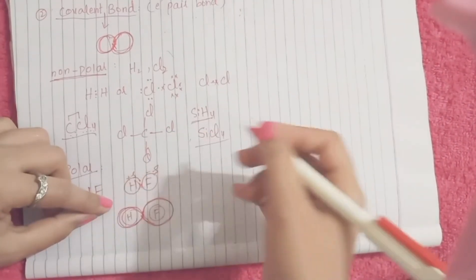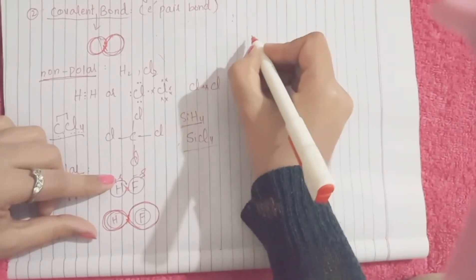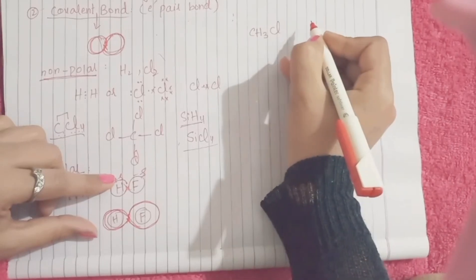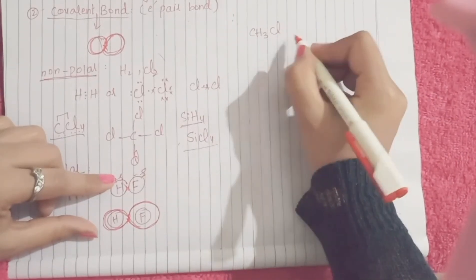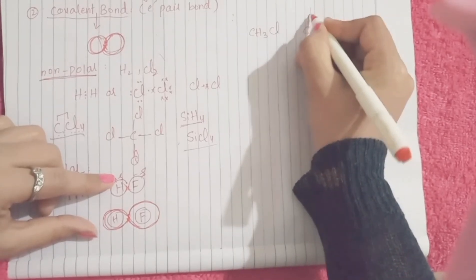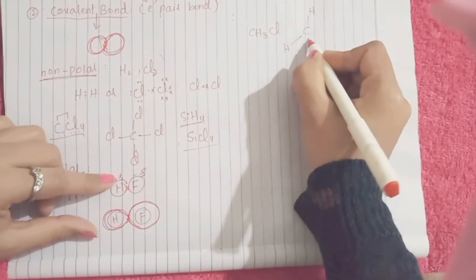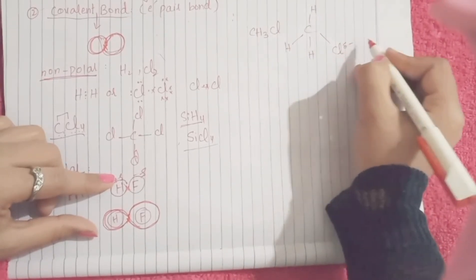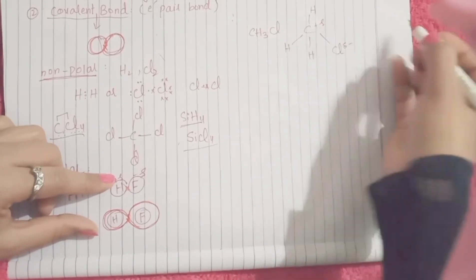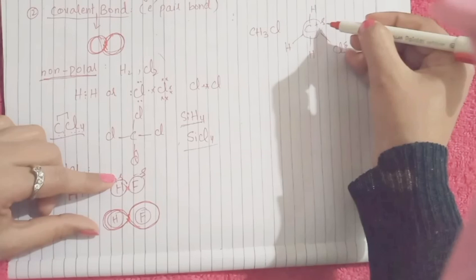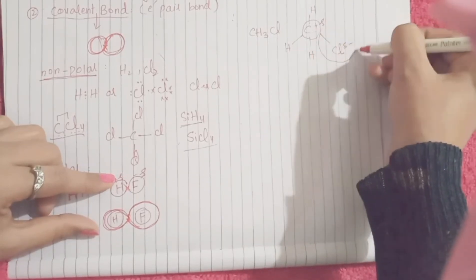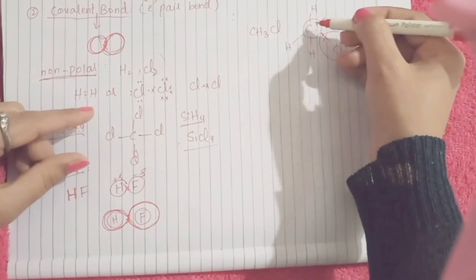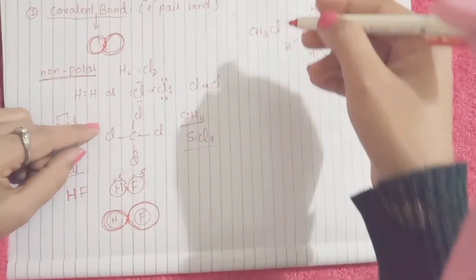Fluorine has pulled the shared electron pair more towards itself, so it gets a partially negative charge. If we take the example of methyl chloride (CH₃Cl), we can draw the molecule. Chlorine is more electronegative than carbon, so chlorine will get a partially negative charge and carbon will get a partially positive charge, because their shared electron pair will pass more time around chlorine than around the carbon atom.